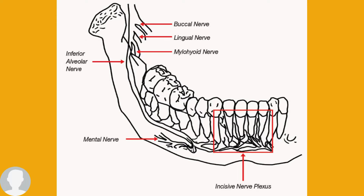We have two terminal branches under the inferior alveolar nerve: the mental nerve and the incisive nerve. The mental nerve supplies the anteriors together with the first and second premolar, whereas the incisive nerve supplies the anteriors together with the first premolar only. So only the first premolar plus the anteriors will be supplied by the incisive nerve, whereas the mental nerve supplies up to the second premolar.